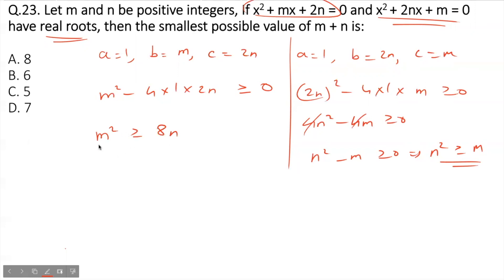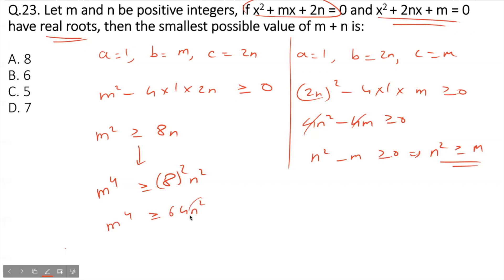The left-hand expression connects m² with n, and the right-hand expression connects n² with m. Squaring the first inequality gives m⁴ ≥ 64n². Since n² ≥ m, substituting in place of n² gives m⁴ ≥ 64m.